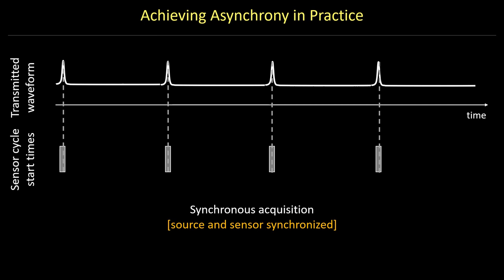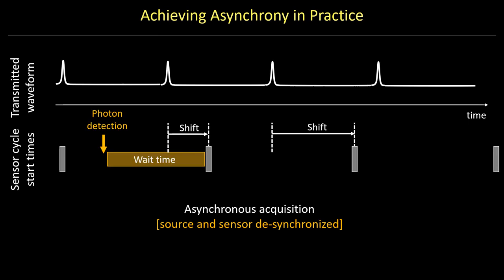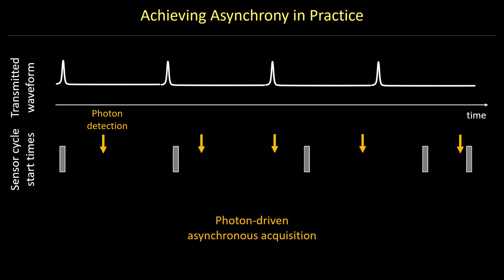One way to achieve delayed start times is to make the sensor cycle longer than the laser cycle. However, this is not very time efficient. A better way to achieve asynchrony in practice is to let the photons themselves determine the cycle lengths. We call this photon-driven acquisition. Due to randomness of photon arrival times, we automatically achieve staggered start times.